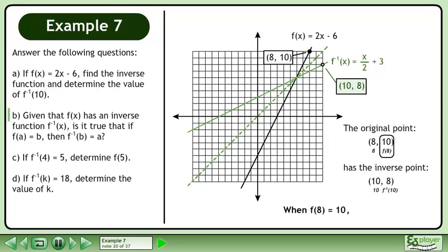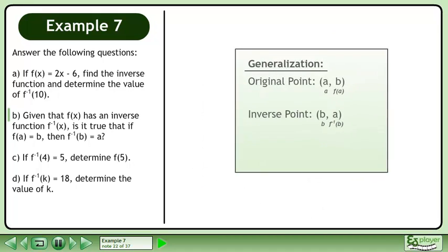When f at 8 equals 10, f inverse at 10 equals 8. Now we'll generalize this result. A point on the original graph, ab, has an inverse point, ba.